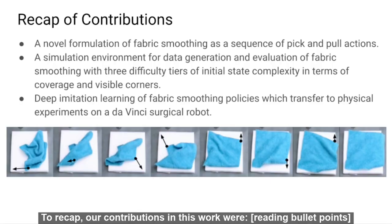To recap, the contributions of this work were: a novel formulation of fabric smoothing as a sequence of pick and pull actions; a simulation environment for data generation and evaluation of fabric smoothing with three difficulty tiers of initial state complexity in terms of coverage and visible corners; and deep imitation learning of fabric smoothing policies which transferred to physical experiments on a da Vinci surgical robot.